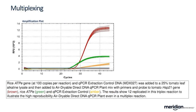With multiplexing: we made it a proper assay — we took the rice ATP gene and added 100 copies to the reaction, added one of our qPCR extraction controls, and mixed it with 25% tomato leaf lysate. We looked at the tomato HSP21 gene, the rice ATP-E gene, and the extraction control, all done as 12 replicates. The 12 replicates give exactly the same CT values — you're getting high reproducibility even with a multiplex reaction.